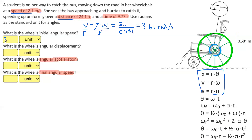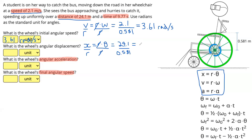Next, the question asks for the wheel's angular displacement. We know the distance that the wheel has covered — that's X — and we're trying to find theta, the angular displacement. Using that first equation, we divide both sides by R to get angular displacement on its own. So angular displacement equals linear displacement divided by radius: 24.1 meters divided by 0.581 meters gives us an angular displacement of 41.5 radians, which we can fill in our answer box.